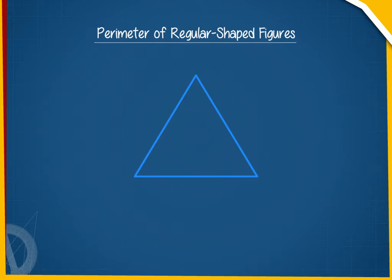If we are to find the perimeter of an equilateral triangle, which is a triangle with all equal sides, we will simply multiply the length of one side by 3. The perimeter of this triangle equals 3 × 6 cm, which is equal to 18 cm.